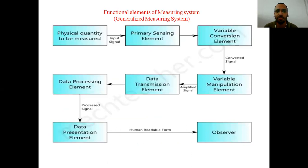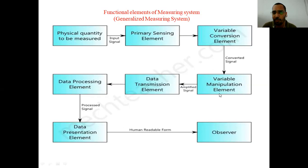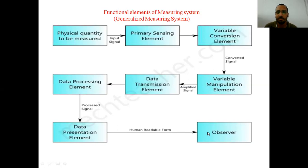This is the flow diagram of the functional elements of a measuring system. The first box shows the physical quantity to be measured as the input signal. First, it goes to the primary sensing element, then to the variable conversion element where it becomes a converted signal, then to the variable manipulation element where it becomes an amplified signal, then to the data transmission element, then to the data processing element where it is stored, and finally the processed signal goes to the data presentation element where it is readable to the observer.